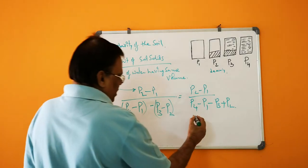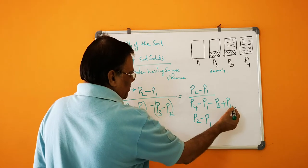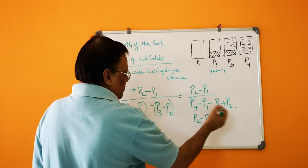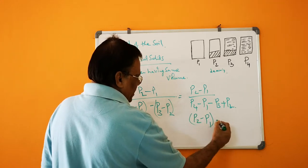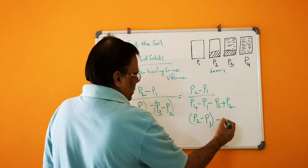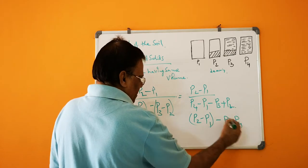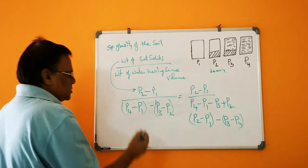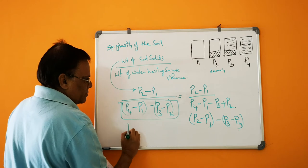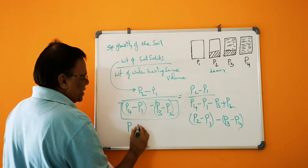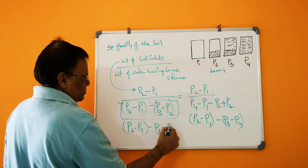So we can rearrange: P2 minus P1, and minus P3 minus P4. This can be written as P2 minus P1 by P4 plus P2 minus P3 minus P1.